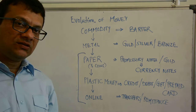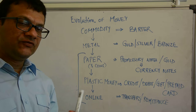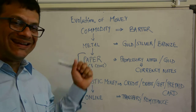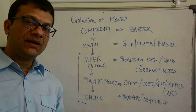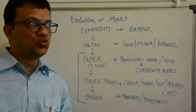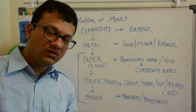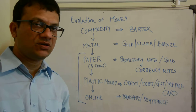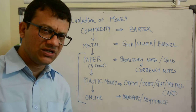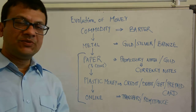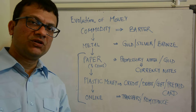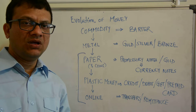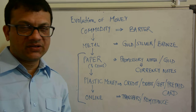From there we evolved to metal. Metal would include precious metal and semi-precious metal. Precious metal would include gold and silver. Semi-precious metal would include copper, bronze, etc.